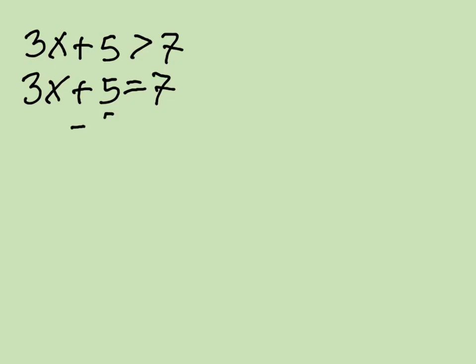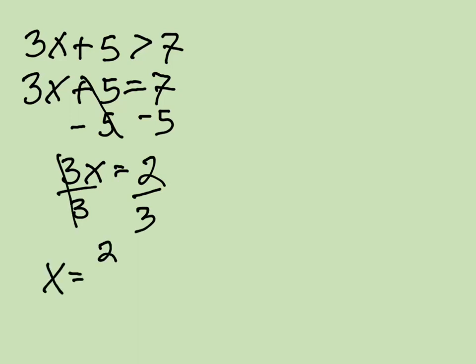If we have an inequality such as 3x plus 5 is greater than 7, we can easily solve that inequality by following the dividing point method. And the first thing we are going to do is make it an equation. So to make it an equation, we just replace the inequality with an equal sign. And then we solve this. And we get x equals 2 thirds as our critical point or our dividing point. So we put a number line down.